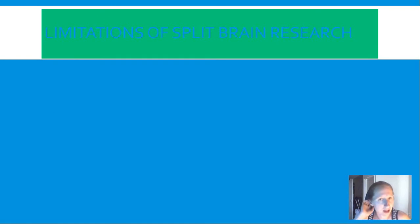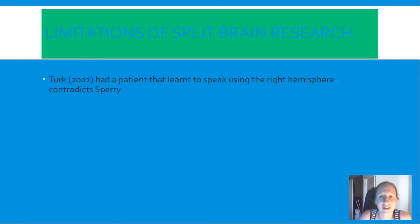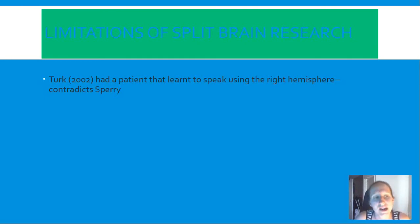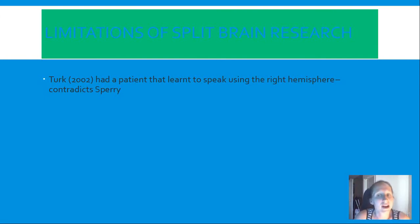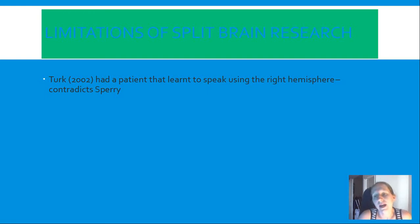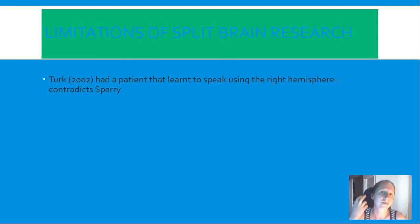There are limitations, however. Some research contradicts Sperry's findings. For example, there was a patient, JW, who learnt to speak using his right hemisphere, which obviously contradicts Sperry. This does sometimes happen when brain damage occurs — areas that ordinarily wouldn't be used for a function are recruited in the other hemisphere.